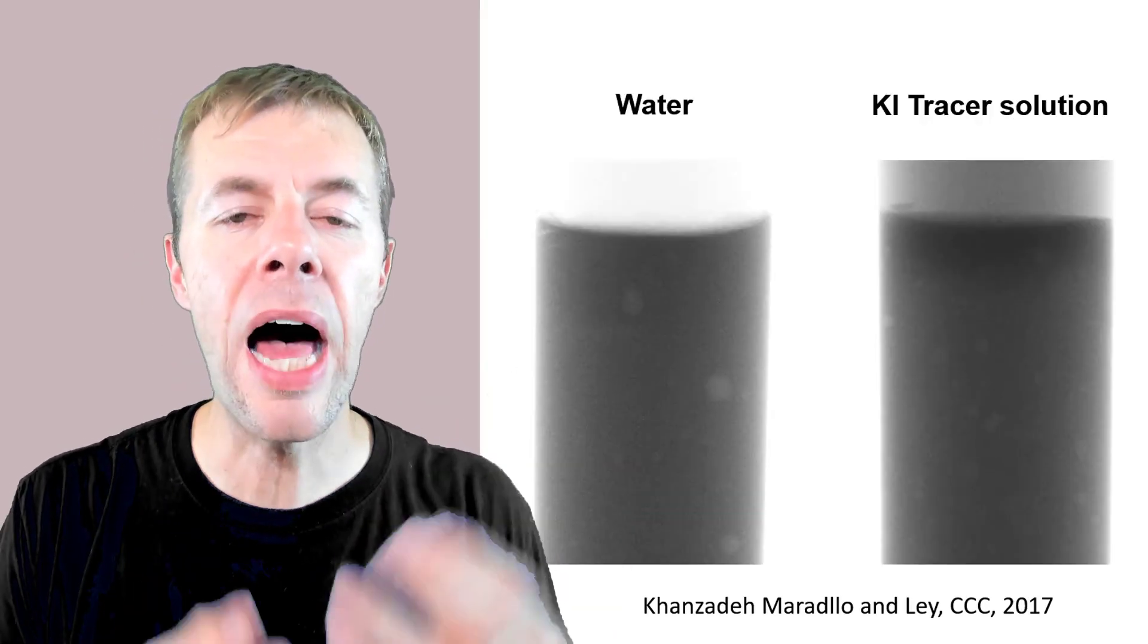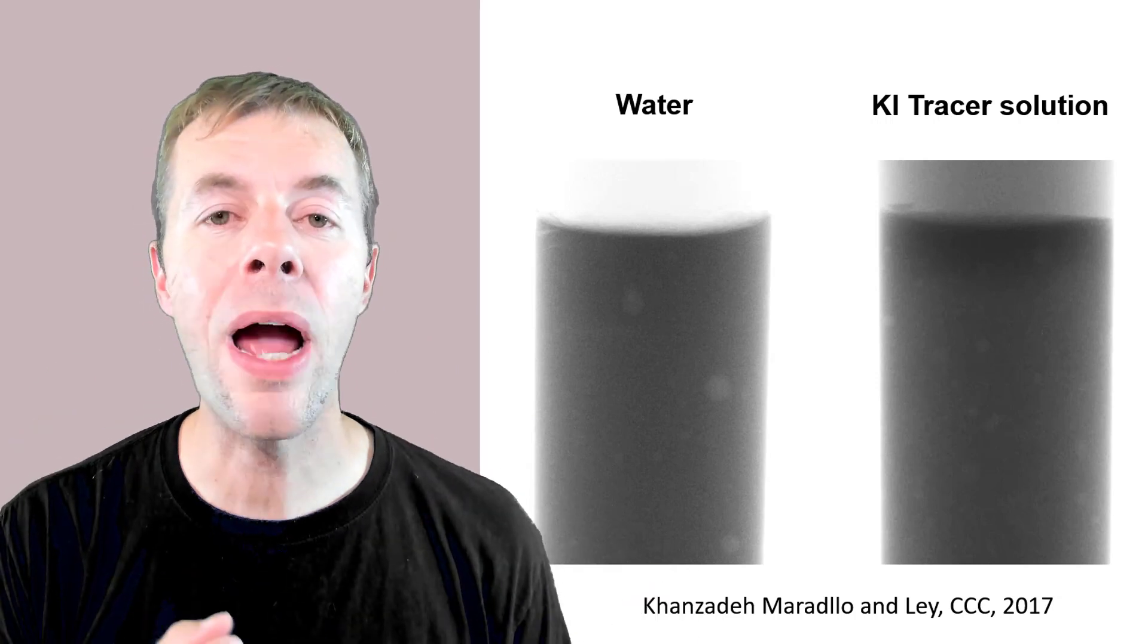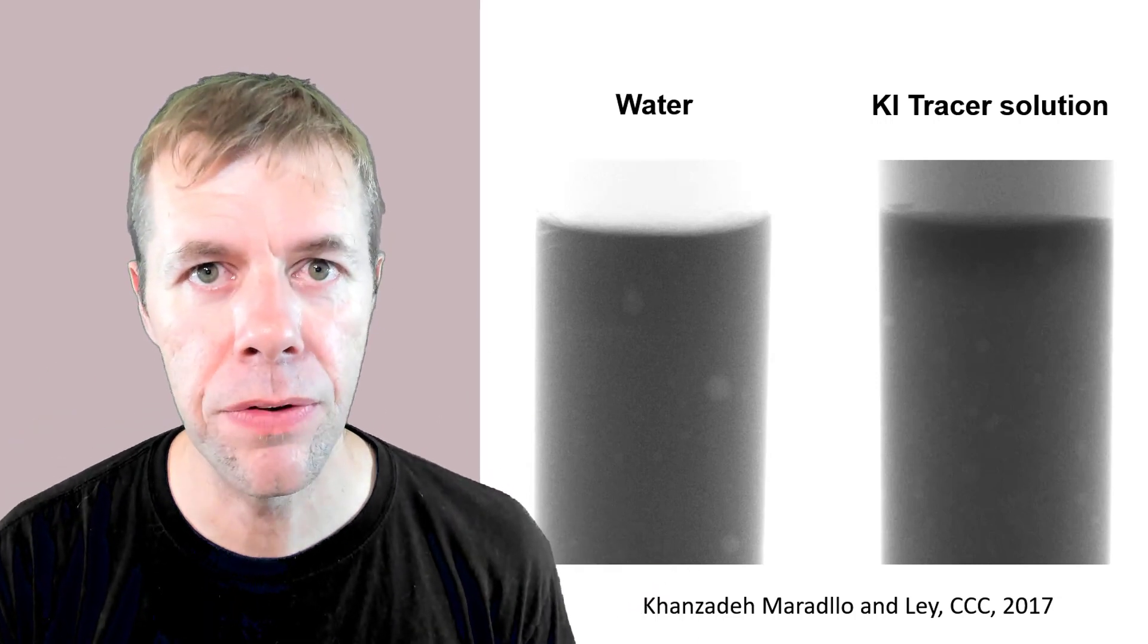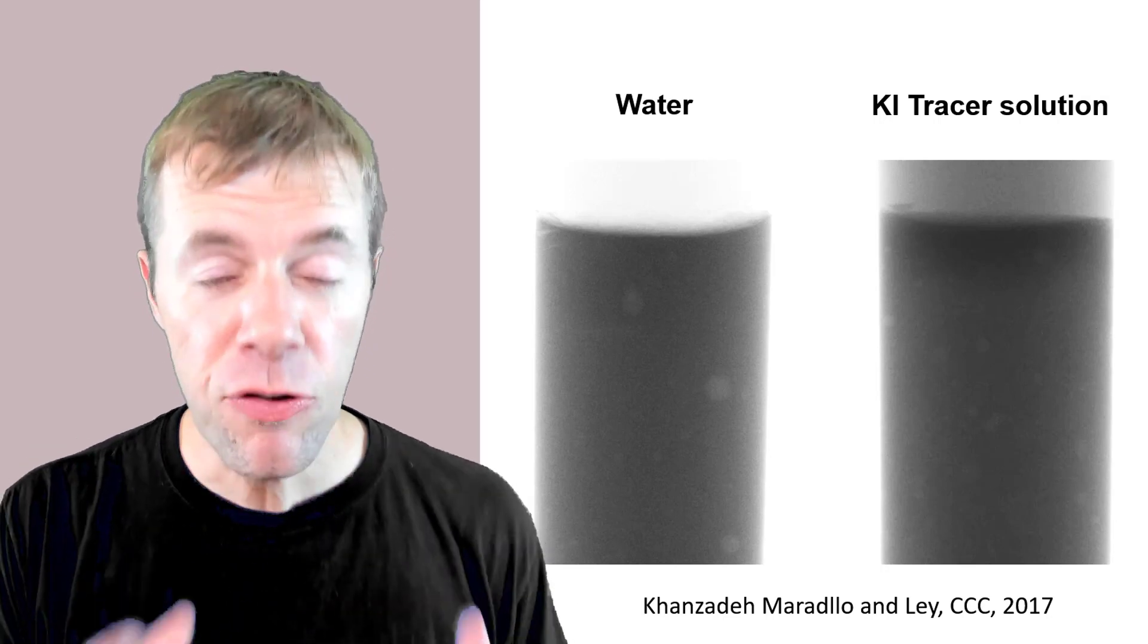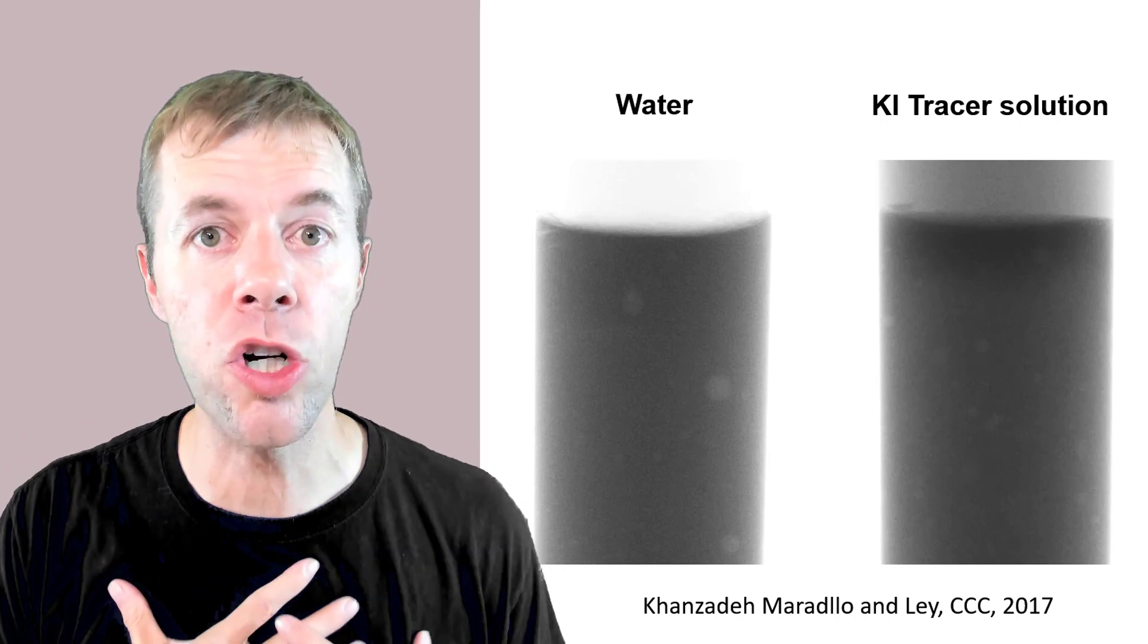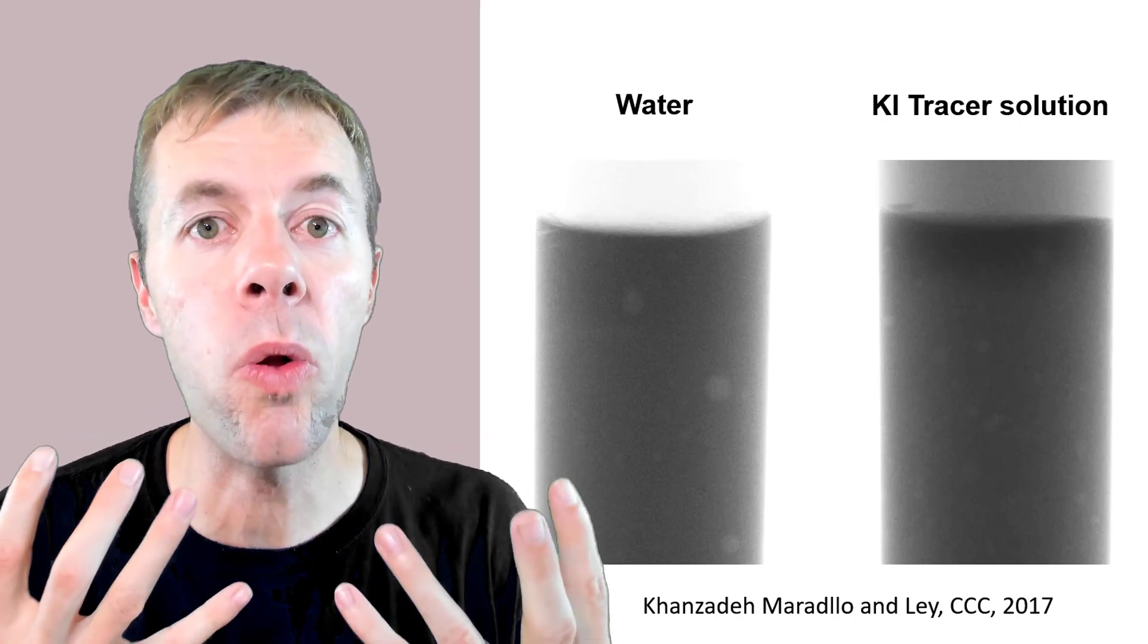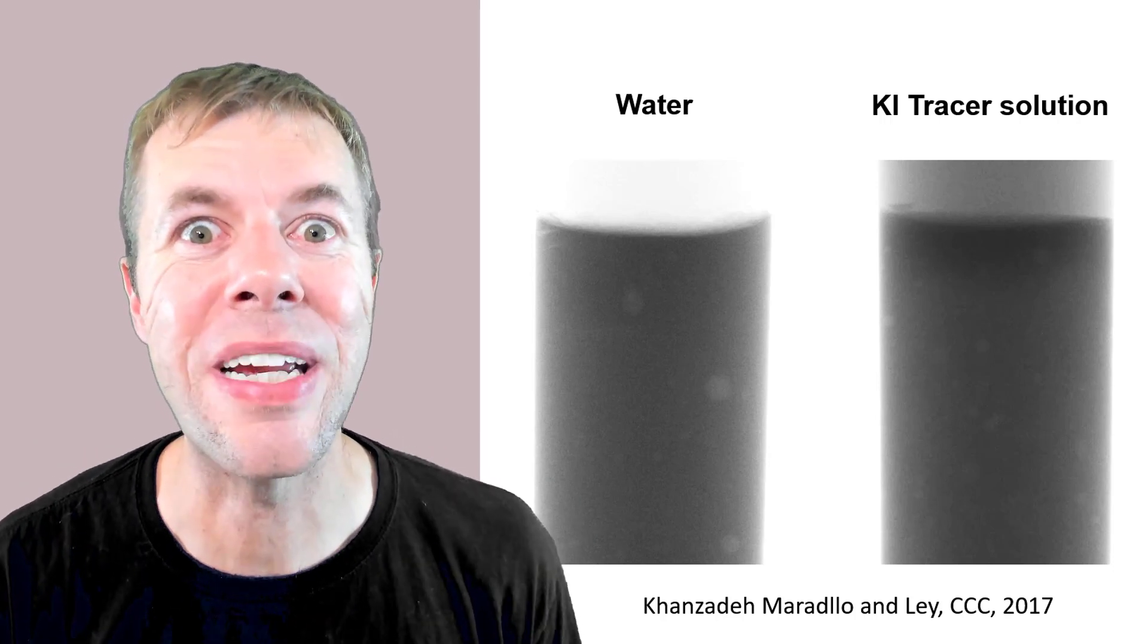The picture on the left is just cement paste with water on top and we can't see anything. But the picture on the right has iodide on it, potassium iodide. It's a tracer. If you've ever drunk like barium sulfate or iodide and then had x-rays done to your body they can see where you're plugged up or where you're leaking on the inside. We're going to do that with concrete.